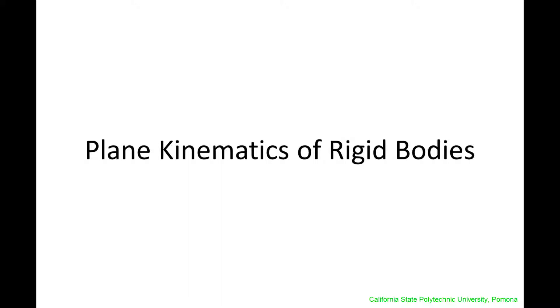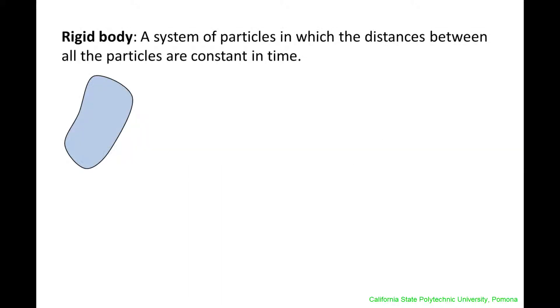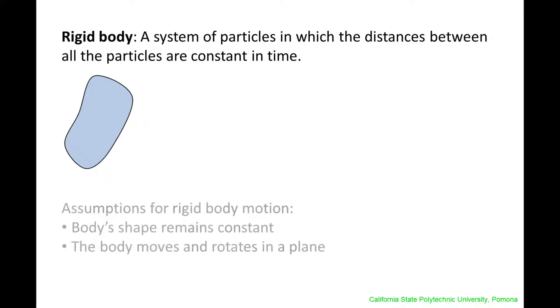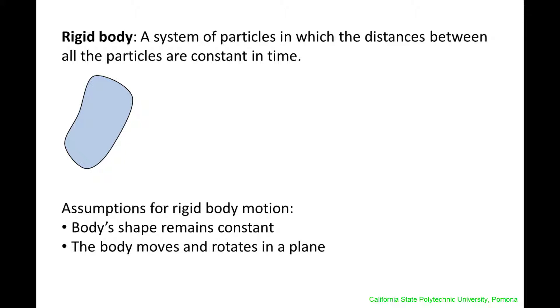In this lesson, we will discuss the motion of rigid bodies moving in a plane. A rigid body is a system of particles in which the distances between the particles are constant in time. We will assume that any change in shape that occurs during a process is much smaller than the movement of the body as a whole and can be neglected. Additionally, we will assume that the motion of a rigid body occurs in a single plane, and we will treat the body as a thin slab.